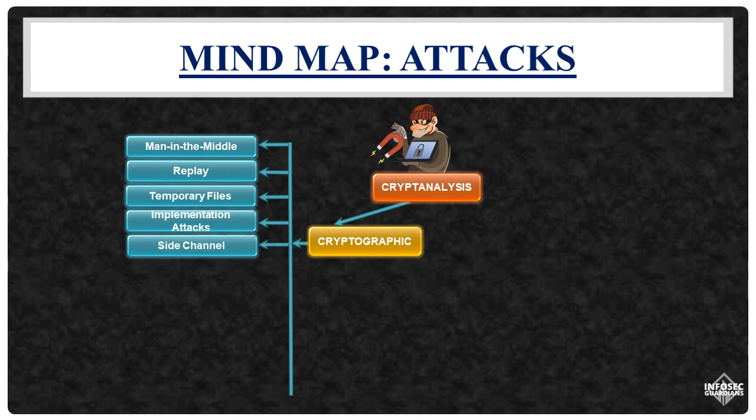Side-channel attacks gather sensitive information by closely monitoring a system engaged in cryptographic tasks. These include power side-channel attacks, timing attacks, and radiation emission attacks.